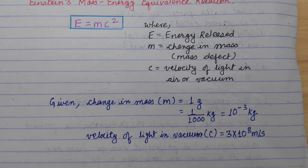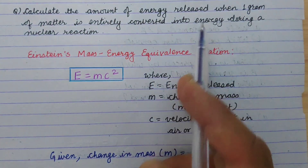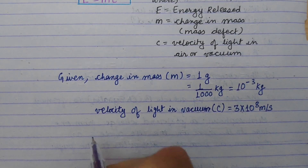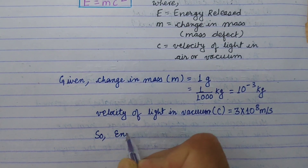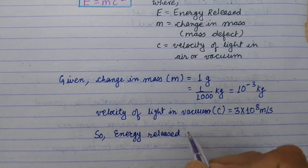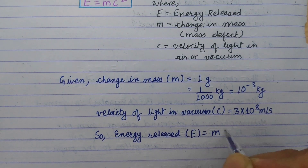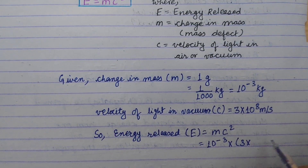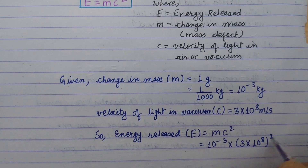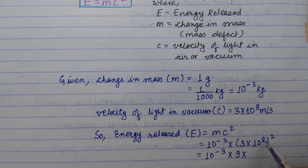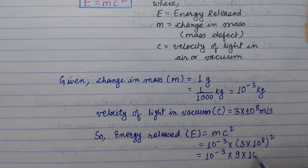Now, calculate the amount of energy released. We can calculate the amount of energy released using E is equal to mc squared. So we have the mass: 10 to the power minus 3, into bracket 3 into 10 to the power of 8, whole squared. That gives 10 to the power minus 3 into 9 into 10 to the power of 16.